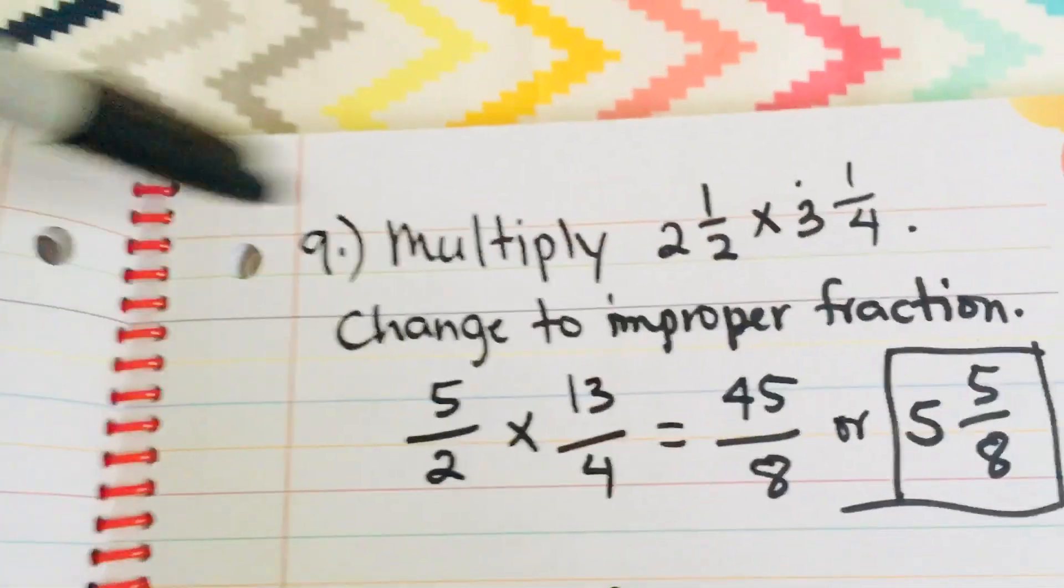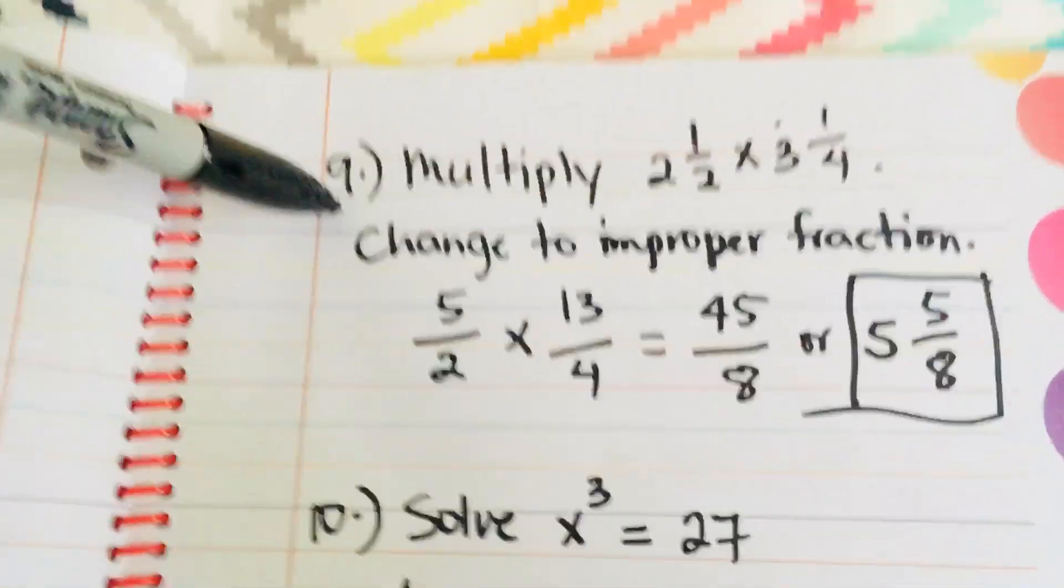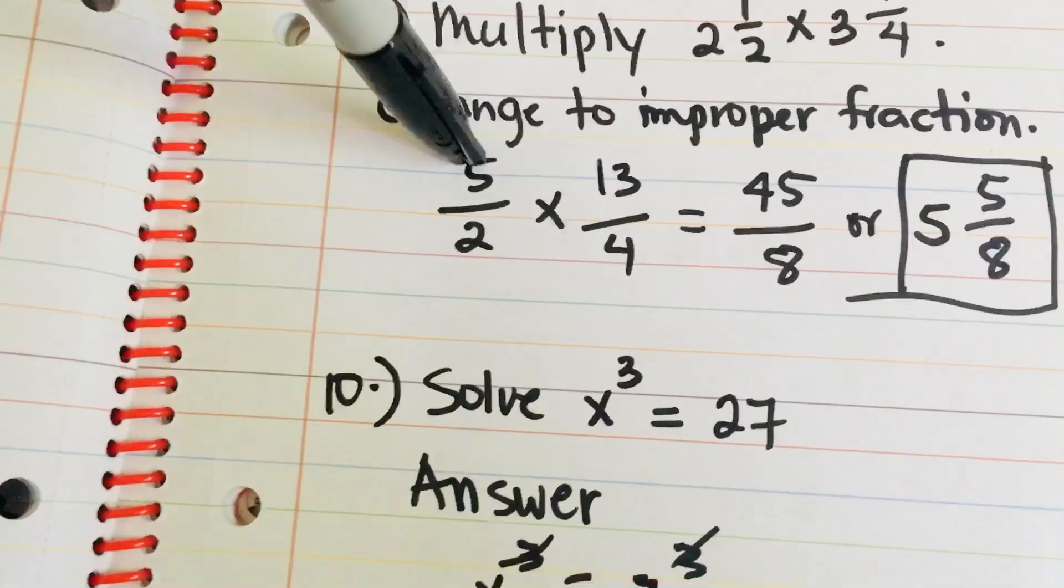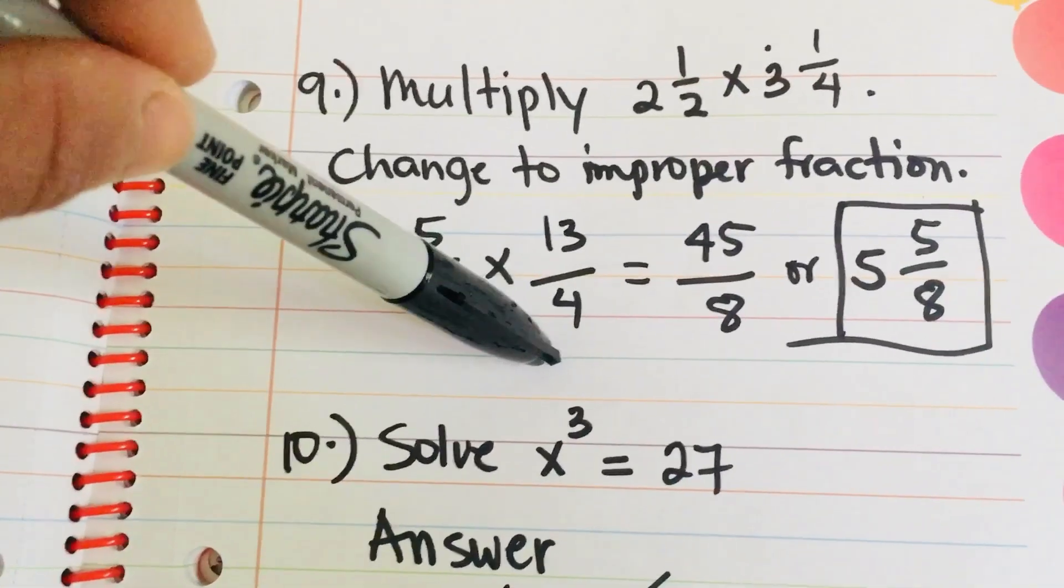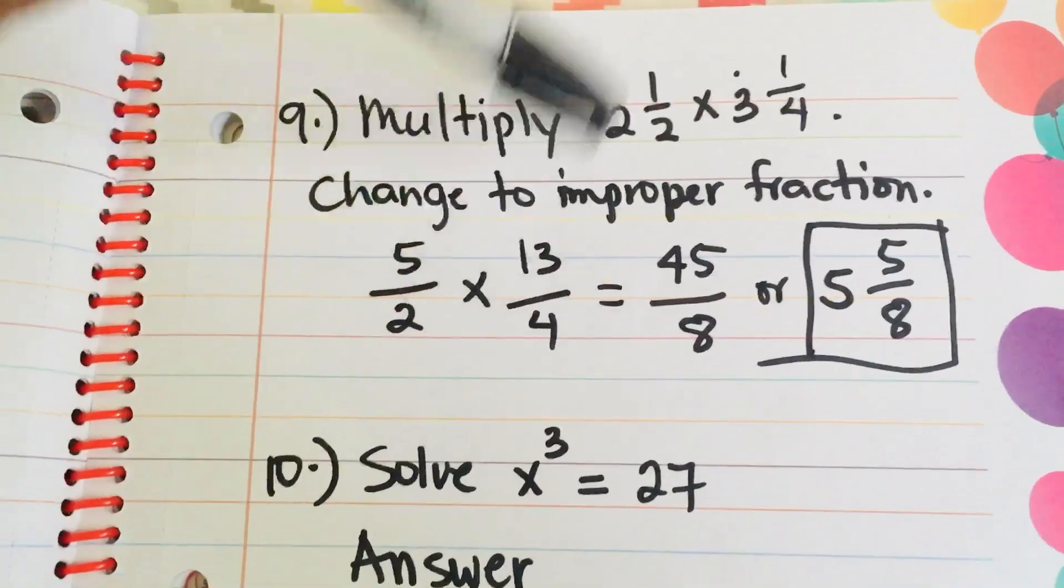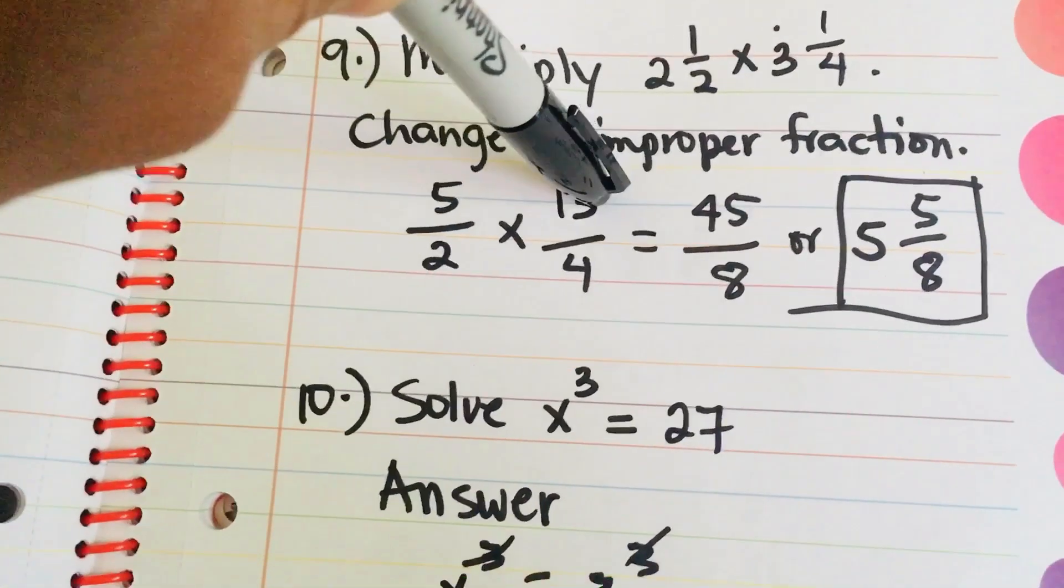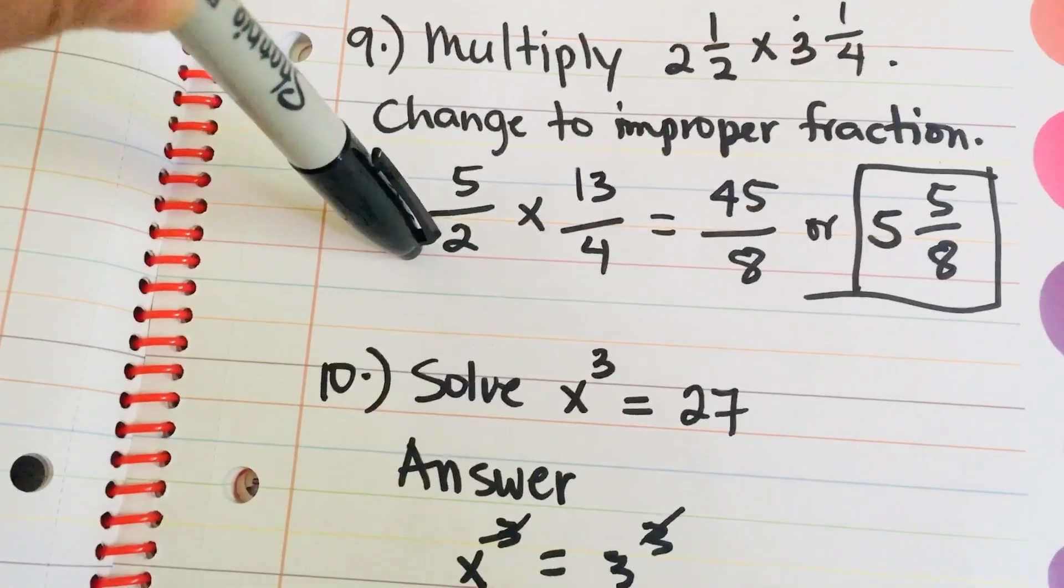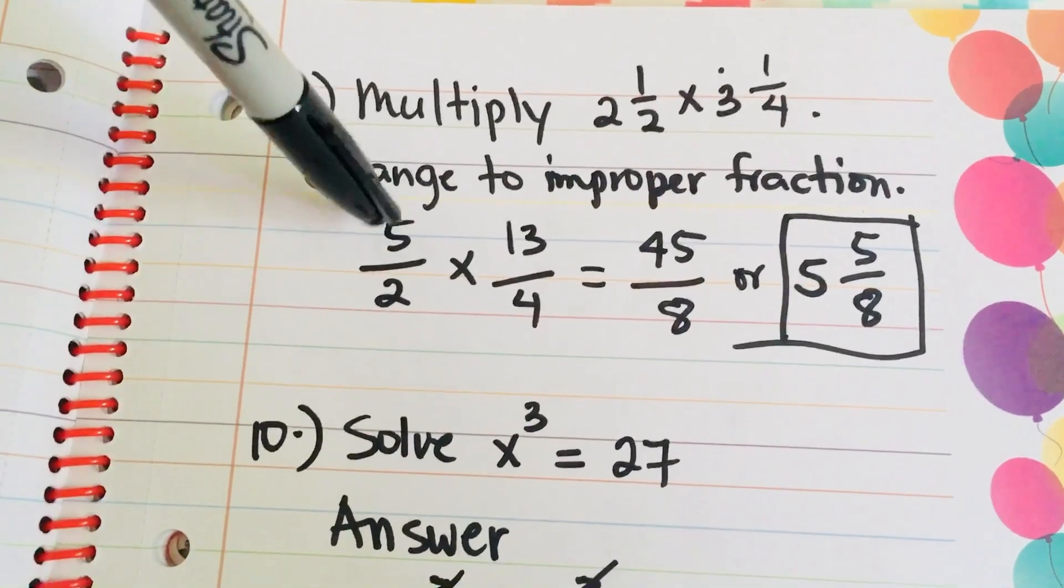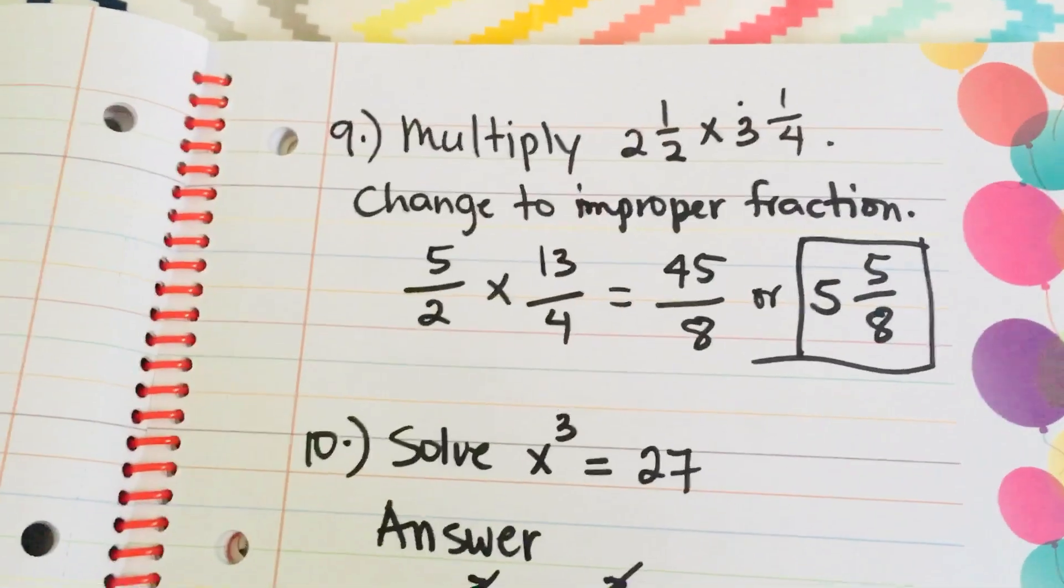So, next, number 9. Multiply 2 and 1 half times 3 and 1 fourth. First, just like division, you have to change to improper fraction. 5 halves times 13 over 4. But, in this case, in multiplication, you do not need to find the reciprocal, only in division. So, you just have to multiply numerator times the numerator and then denominator times denominator. Then, you have to reduce your answer to the lowest term. So, the answer is 5 times 13 is equal... Oh, this is wrong.